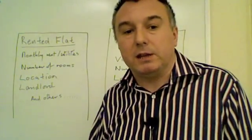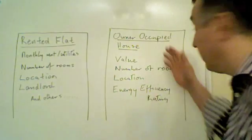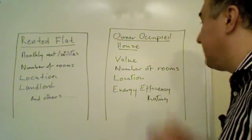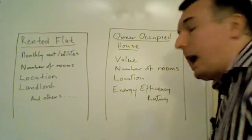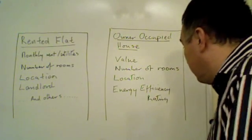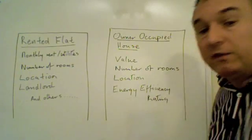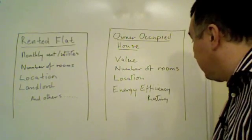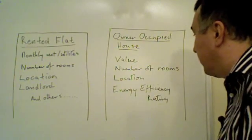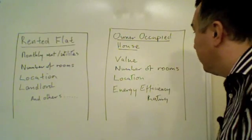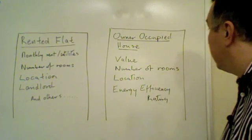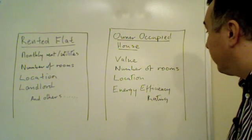Then we carry on with the analysis and we find out that there's also something called an owner-occupied house. In this case, the attributes are its value, the number of rooms, the location, and something called the energy efficiency rating of the house. Again, we figure out the best way to store these values and we write some code and encapsulate this into a single thing.